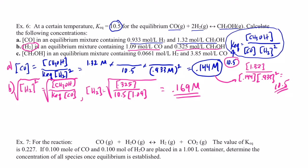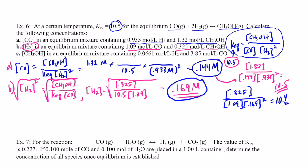Let's check that answer. Plugging back in: [CH3OH] = 0.325, [CO] = 1.09, [H2] = 0.169 squared. Calculating: 0.325 divided by 1.09 divided by 0.169² gives 10.4. Remember, we did some rounding, so being off in the last digit is acceptable. I'm confident with 0.169 M as the answer.